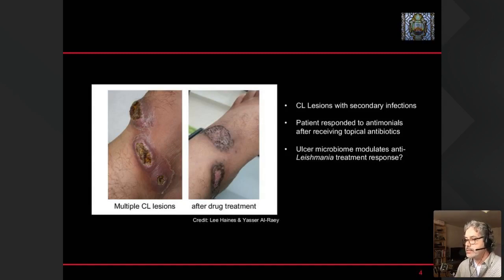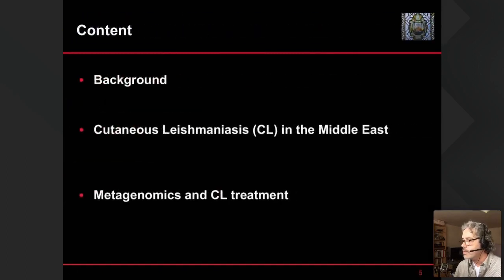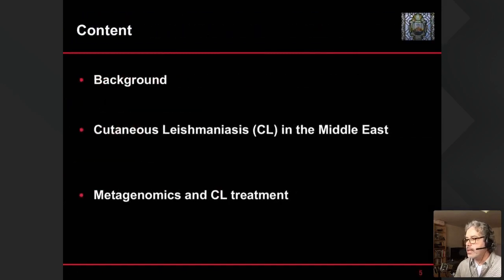This is not necessarily unresponsiveness due to the parasite becoming resistant to drug treatment — the patient became unresponsive due, in principle, to secondary infections. So the question is whether the ulcer microbiome is somehow modulating the anti-leishmania treatment response.